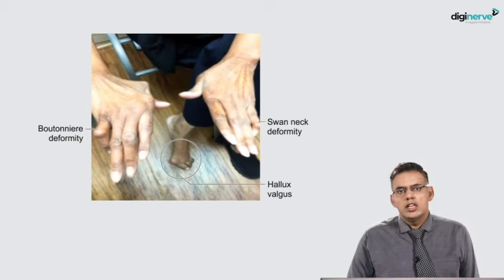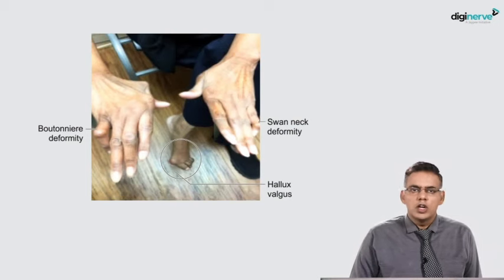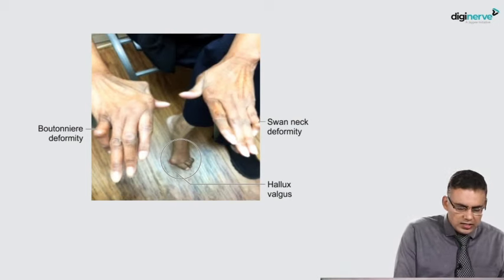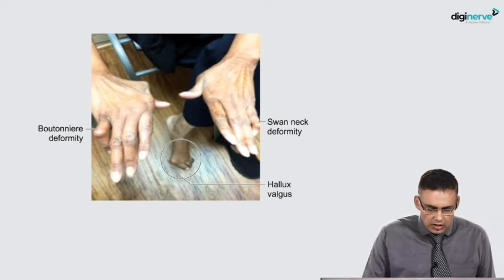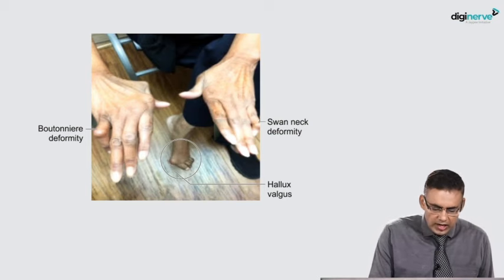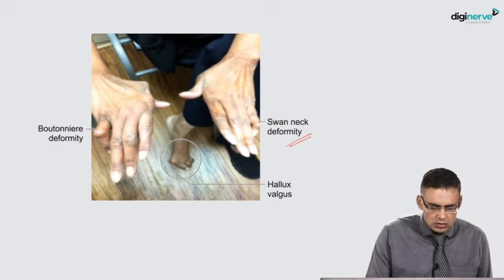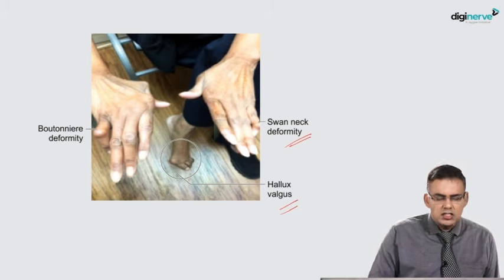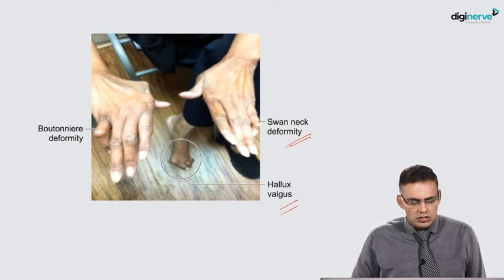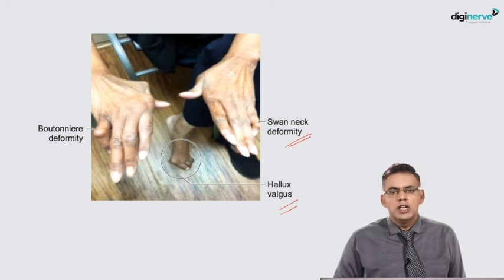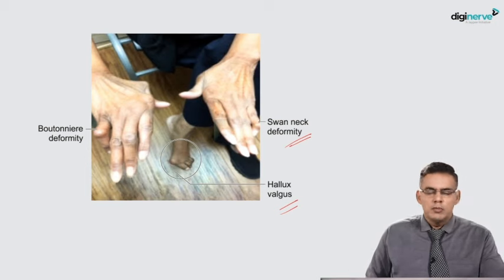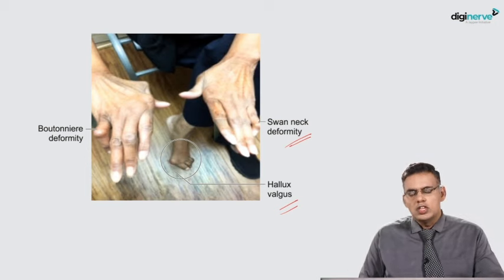This is a presentation you see in a patient with rheumatoid arthritis. You can see these knuckle heads over here which are boutonnière deformities. You see this swan neck deformity over here, and this is a hallux valgus deformity which you can see on the big toe. These are the deformities which the patients present.